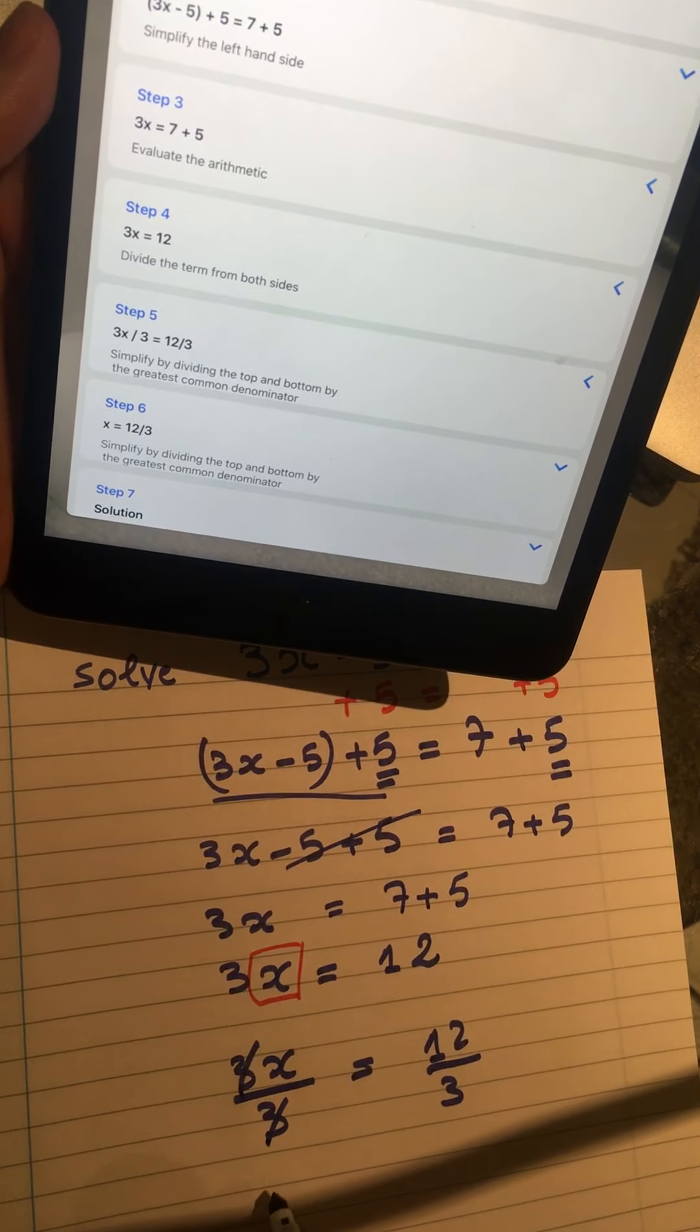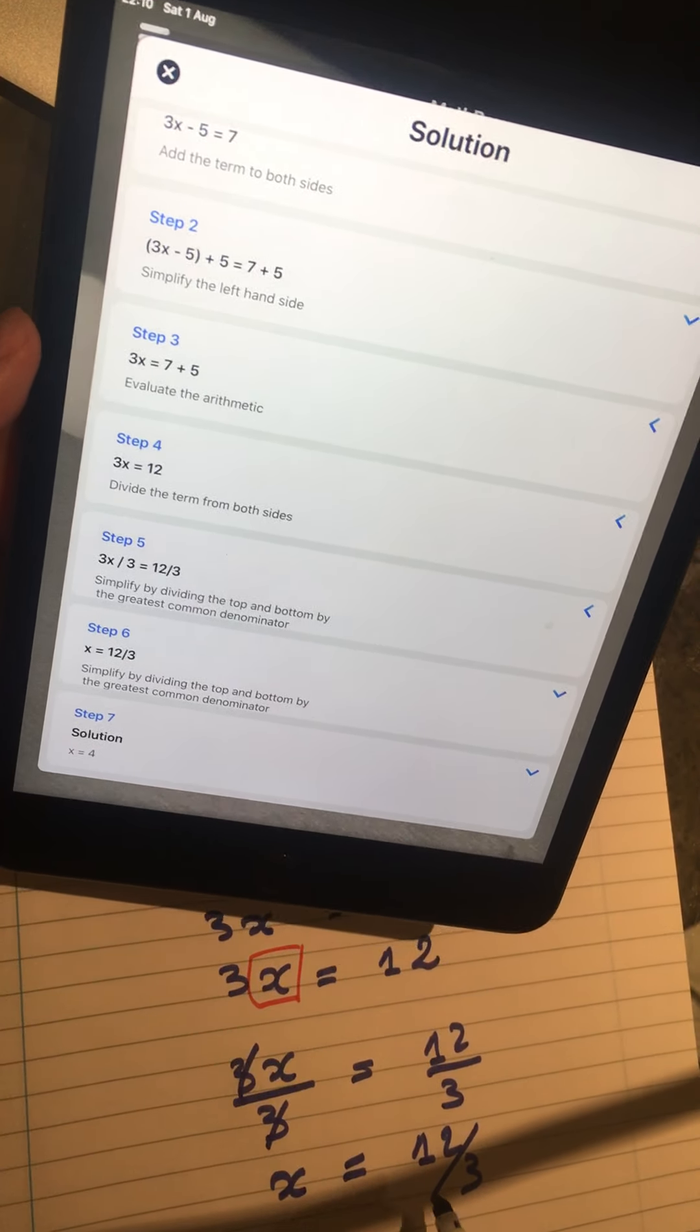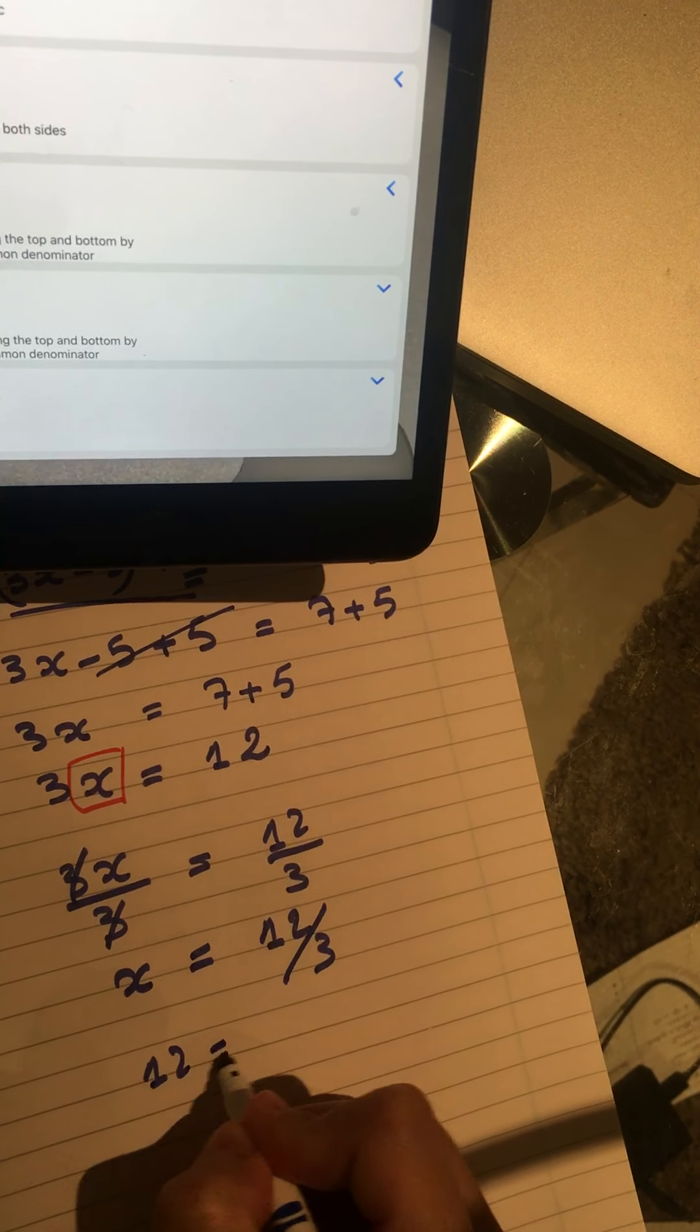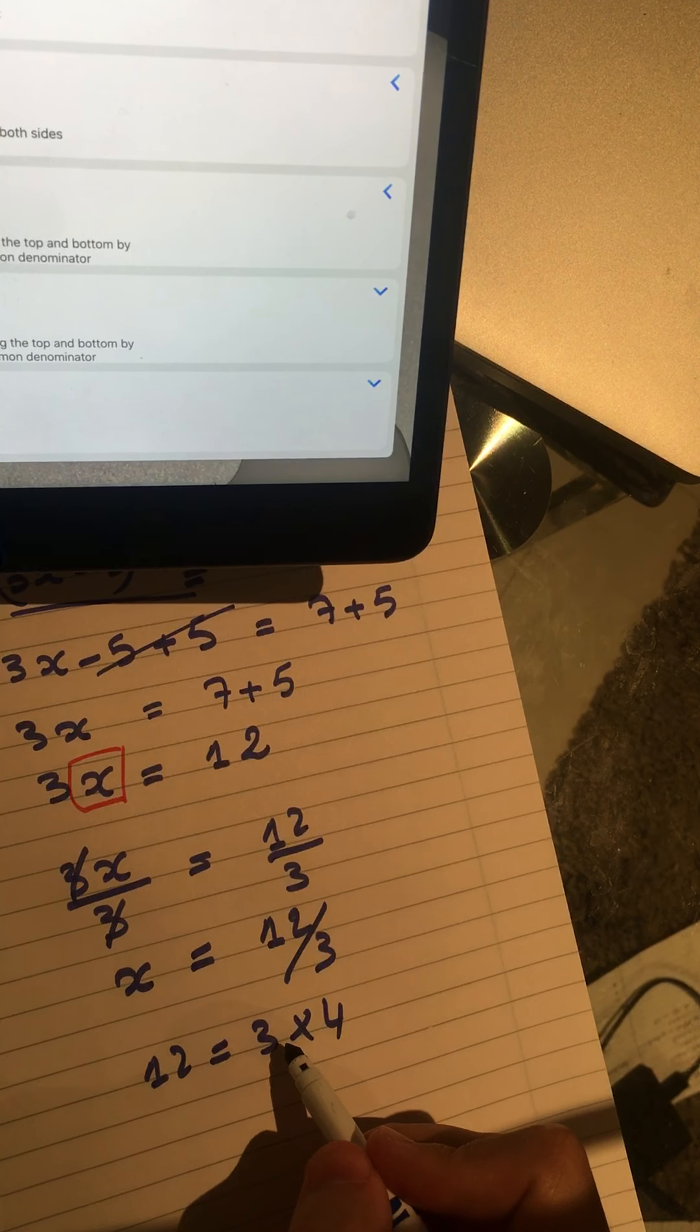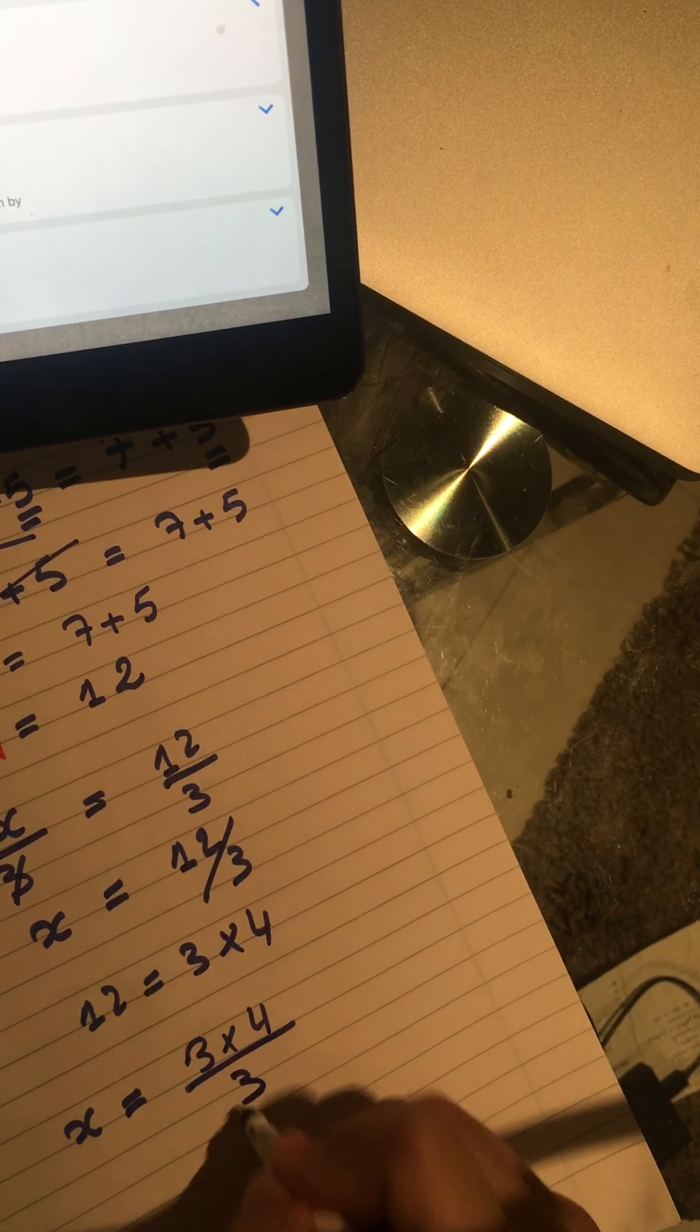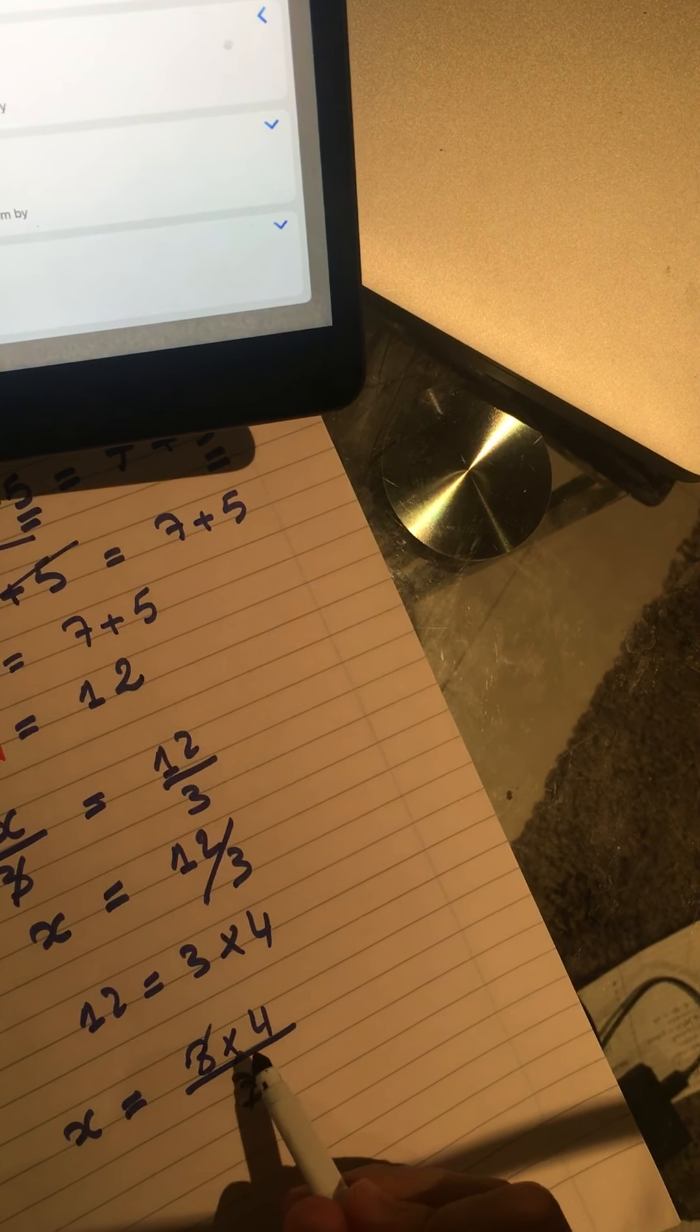12 divided by 3, I know that I can divide 12 by 3 because 12 is equal to 3 multiplied by 4. So the common denominator is 3, so I can do x equals 3 multiplied by 4 divided by 3, because 3 multiplied by 4 equals 12. Now I can simplify with 3, and now I'm only left with 4.